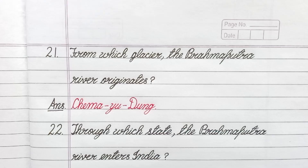From which glacier does the Brahmaputra River originate? Answer: Simayudum.